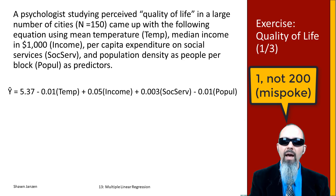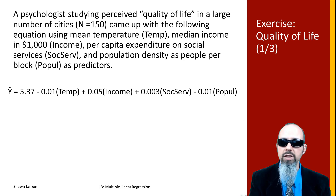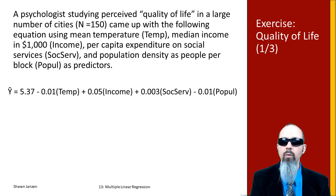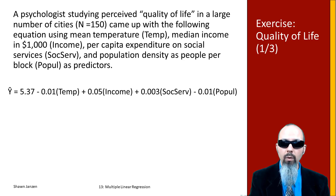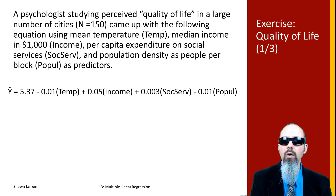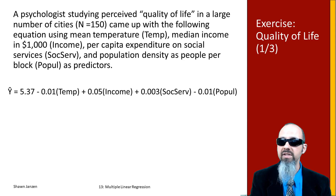What we have on the slide is a regression equation with four independent variables used to predict quality of life. We've generated a y-intercept and coefficients for each independent variable, where y-hat is our predicted quality of life. The y-intercept is 5.37, which means if each of our independent variables were equal to zero, the quality of life index would be 5.37 on average.